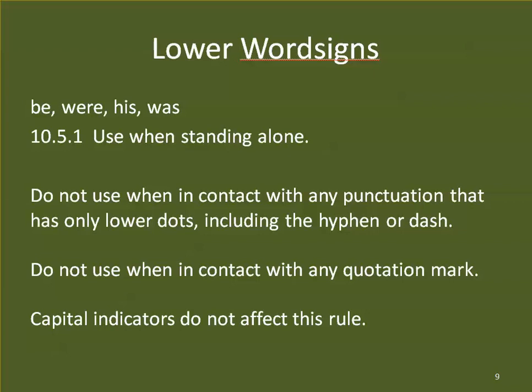Another limitation: we do not use BE, WERE, HIS, or WAS when they are in contact with any kind of quotation mark. UEB has quite a variety of quotation marks. Just be aware that some have upper dots, but when talking about contractions, we consider all quotation marks to have only lower dots. So if they're in contact with any quotation mark, we cannot use BE, WERE, HIS, or WAS. Capital indicators do not affect this rule — even if you have a quotation mark, a capital indicator, and then one of these four lower word signs, we cannot use them.